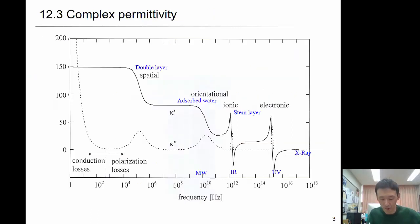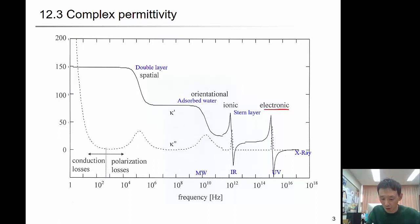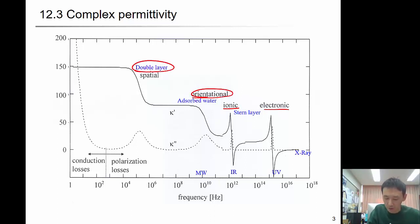Recall the permittivity and relaxation behavior of water: you have electronic resonance, ionic resonance behavior, orientational relaxation, double layer relaxation, and spatial relaxation because of the double layer in clay — kaolinite or bentonite.